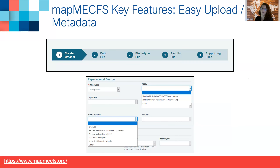Our easy-to-upload system features a step-by-step workflow. The selections change based on your data type. So in this case, I've selected that we want to upload DNA methylation data, and that has changed our options for both the assay and measurement to DNA methylation-specific choices. This has two benefits: it's easier for the data uploader, and it also controls the vocabulary on the site.